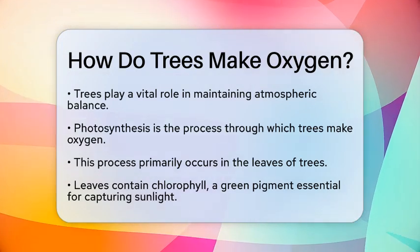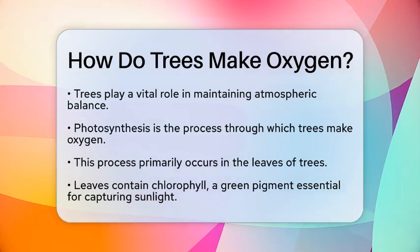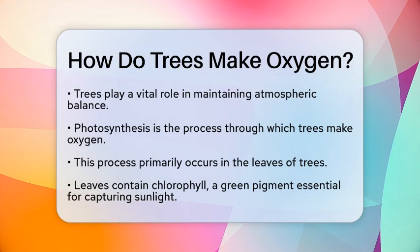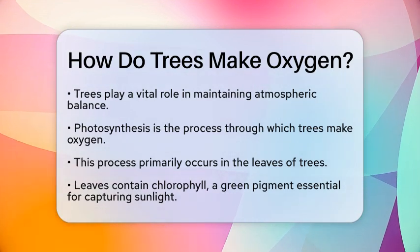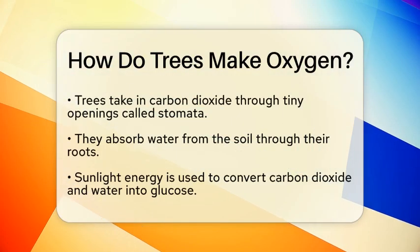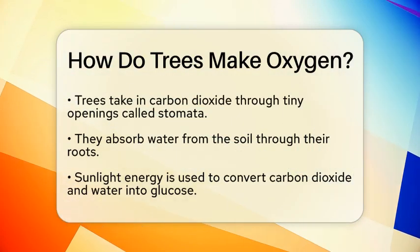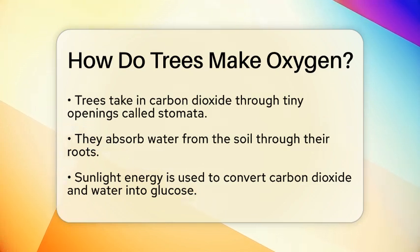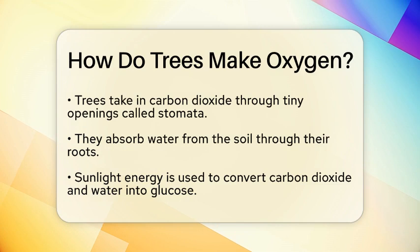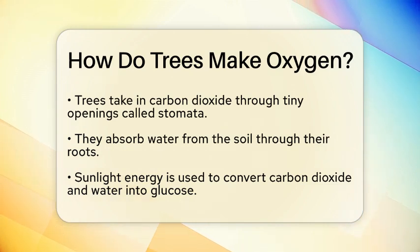To understand how trees make oxygen, we must first look at a process called photosynthesis. This process occurs primarily in the leaves of trees, which contain a green pigment known as chlorophyll. Chlorophyll captures sunlight, which is essential for photosynthesis to take place.